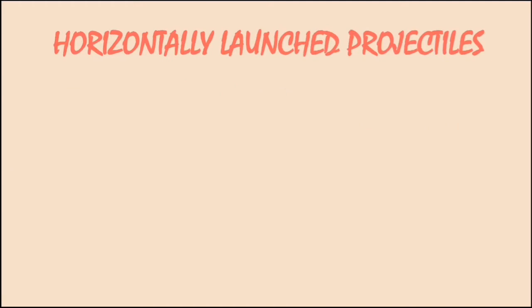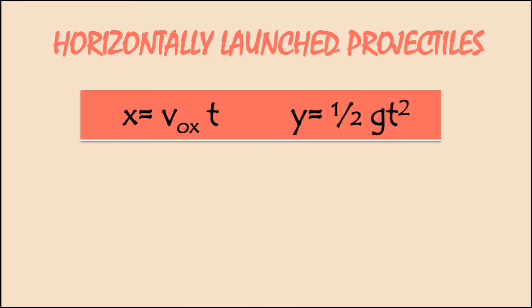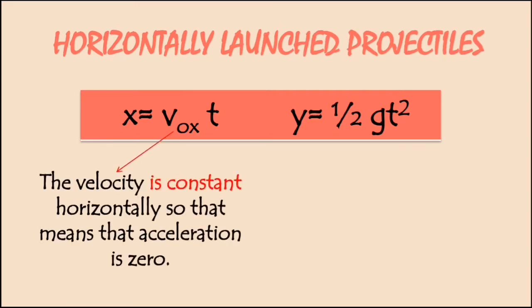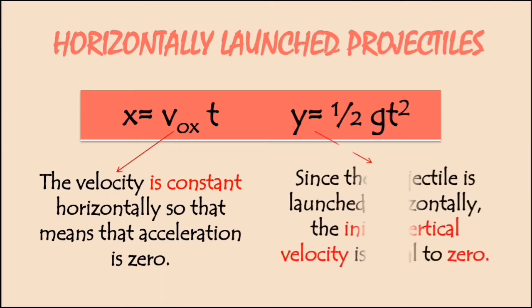To analyze a projectile in two dimensions, we need two equations. One for the x direction and one for the y direction. For this, we use kinematic number 2. In the first equation, the velocity is constant horizontally, so that means acceleration is 0. And the second equation: since the projectile is launched horizontally, the initial vertical velocity is equal to 0.